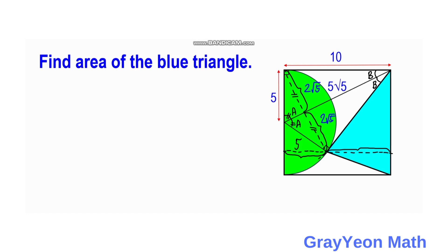By Thales' theorem, the line from the point of tangency to the corner of the square forms a right triangle. So this is a right triangle with hypotenuse 10. The combined segment we calculated is 2 square root of 5, and adding both congruent parts gives us 4 square root of 5.